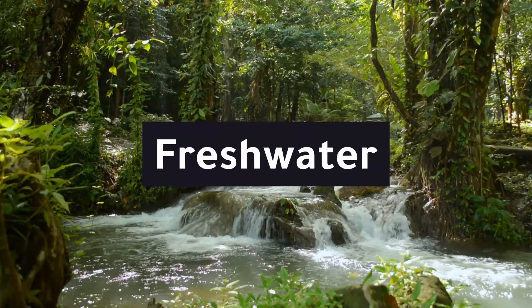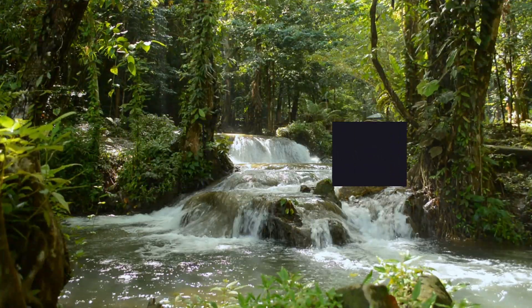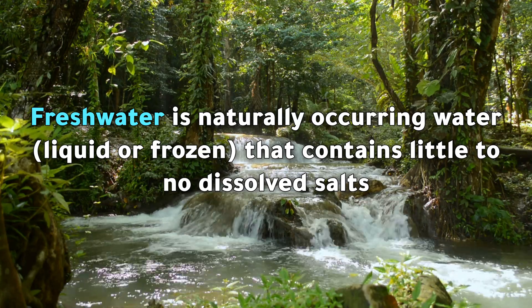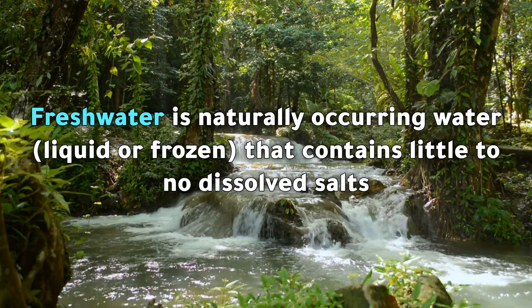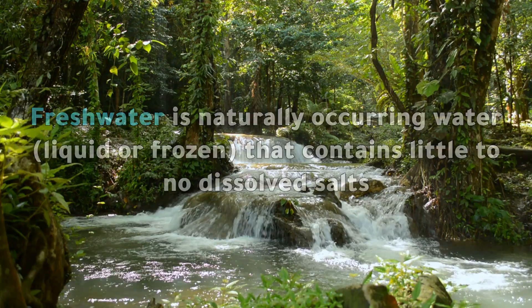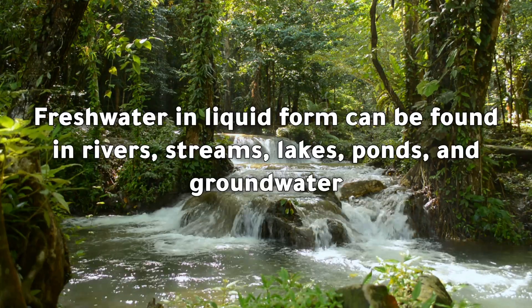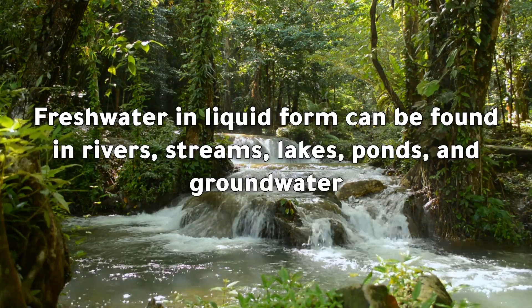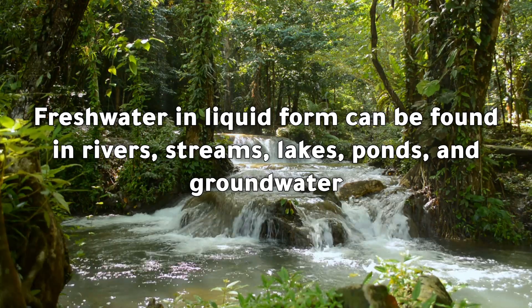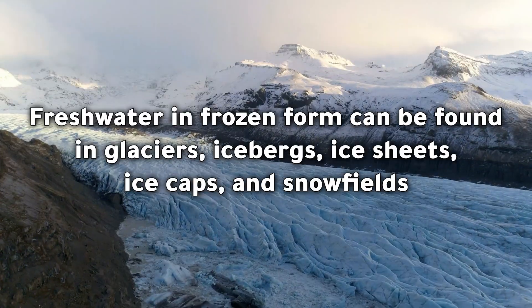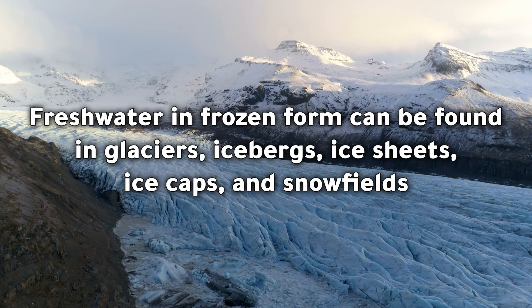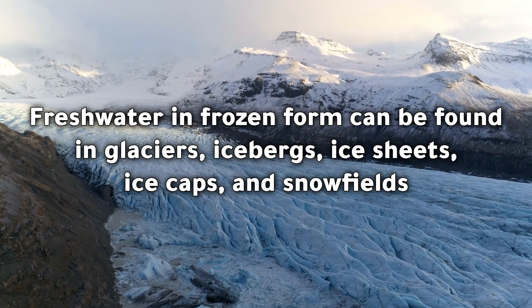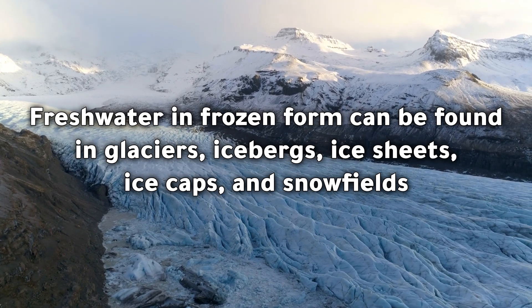Fresh water is naturally occurring water, liquid or frozen, that contains little to no dissolved salts. Fresh water in liquid form can be found in rivers, streams, lakes, ponds, and groundwater. Fresh water in frozen form can be found in glaciers, icebergs, ice sheets, ice caps, and snow fields.